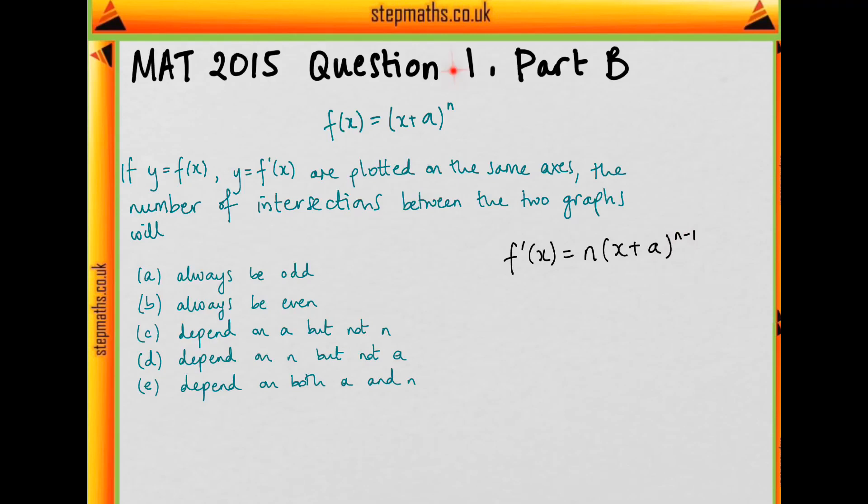And so we know if n is even, then n minus 1 is odd, and if n is odd, then n minus 1 is even. So if f is an even function, then f dashed is an odd function, and similarly if f is an odd function, then f dashed is an even function.